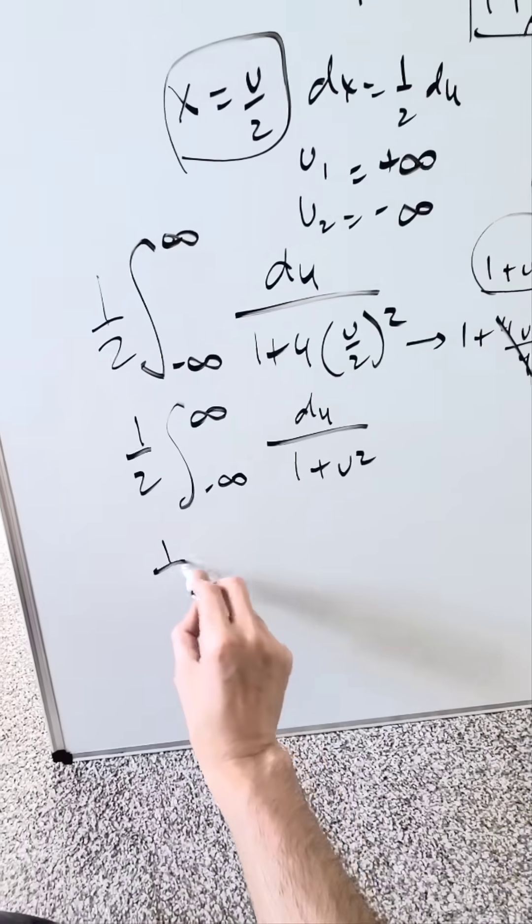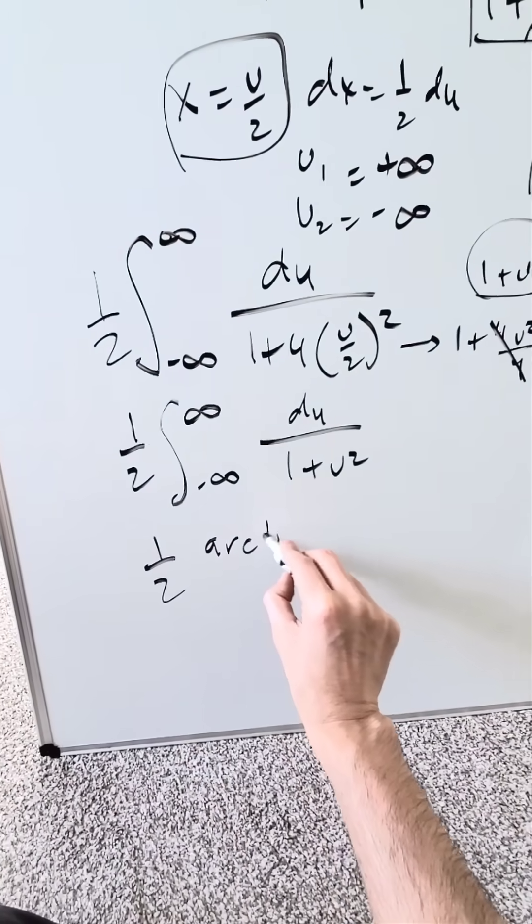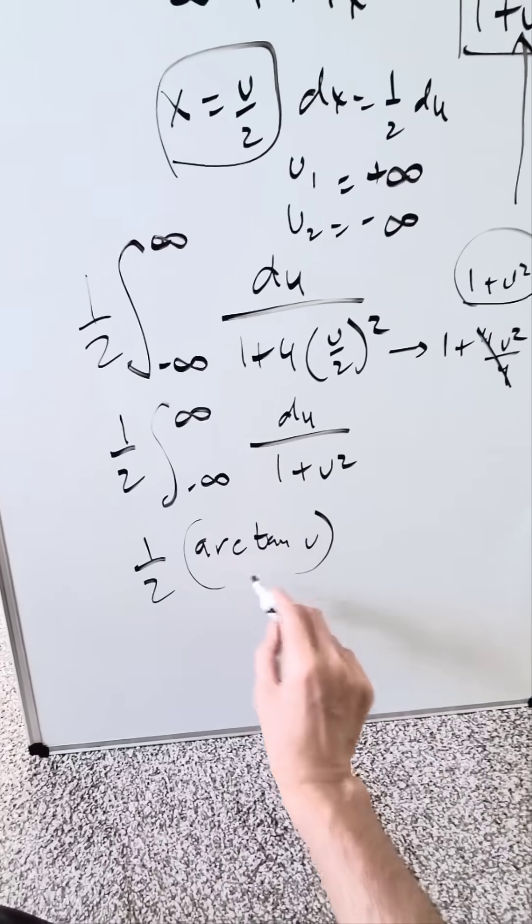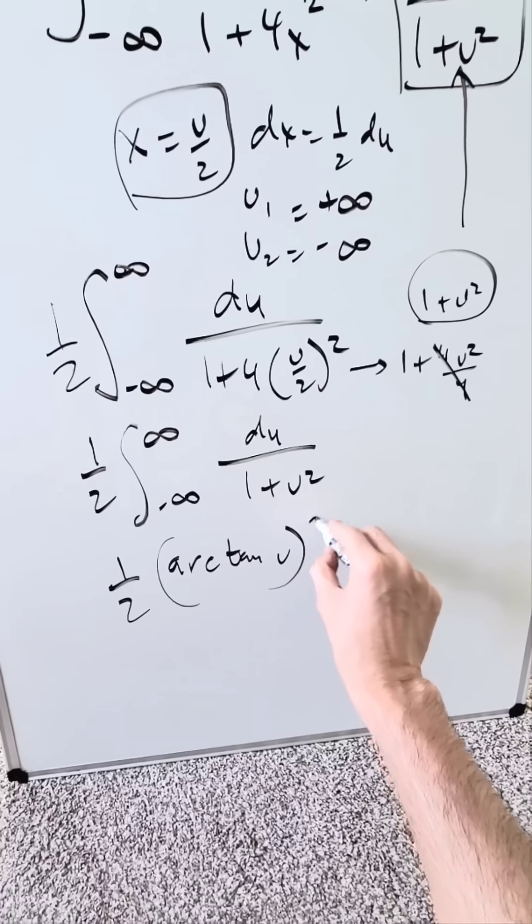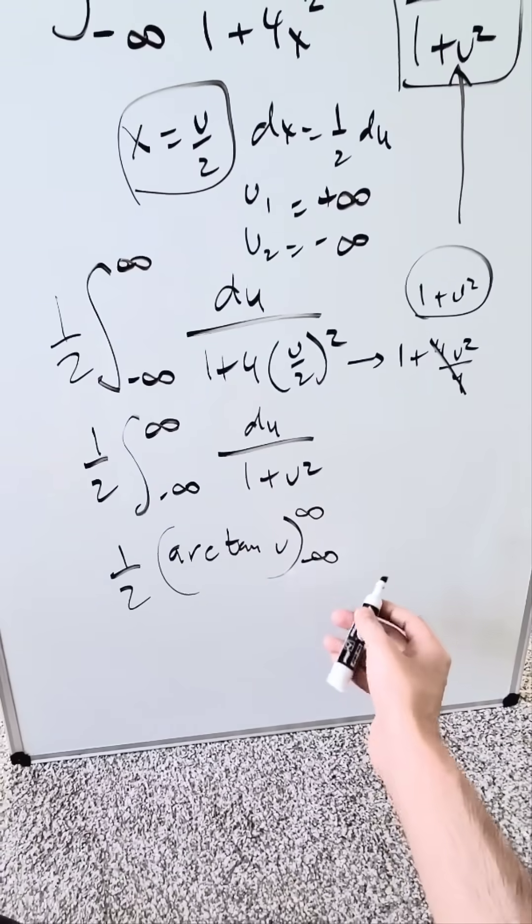The anti-derivative is what? I have 1 over 2 arctan u. That's it. It's a definite integral. Do not bring back your substitution for u. You compute it as you see it because it's a definite integral.